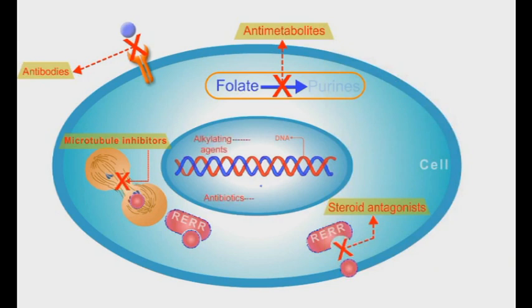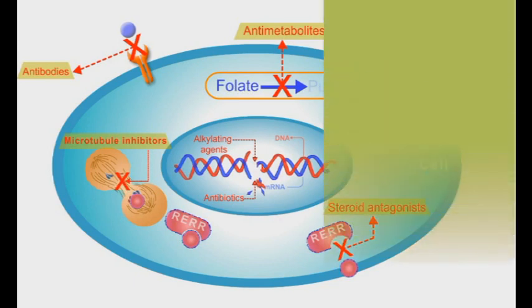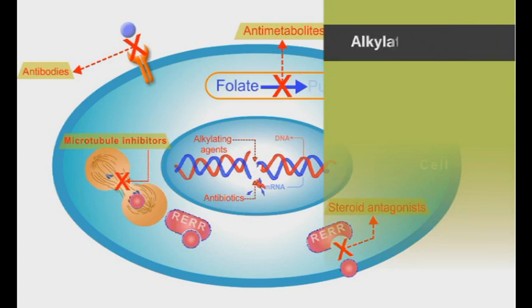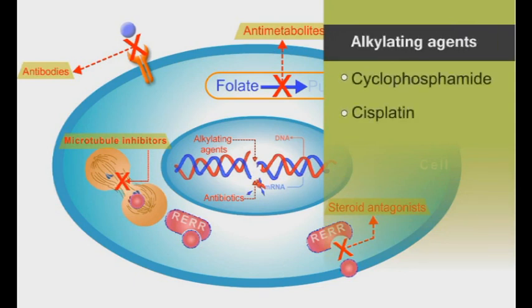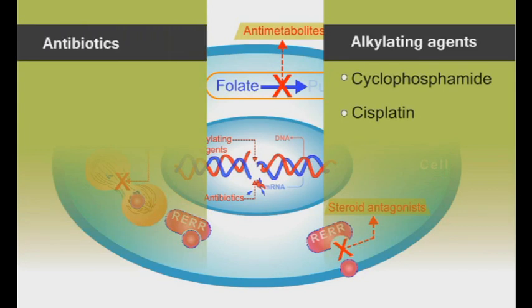Finally, the alkylating agent and antibiotic groups work mainly through interfering with DNA synthesis and proliferation. Alkylating agents include cyclophosphamide and cisplatin. Antibiotic anticancer agents include bleomycin and dactinomycin.